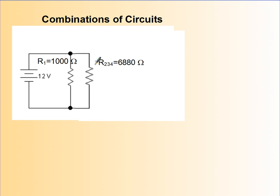Now I've replaced resistors two, three, and four with the equivalent resistance, and I see this is now a parallel circuit. Oh that's wonderful, because now I can find the equivalent resistance of these two.